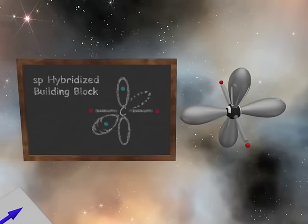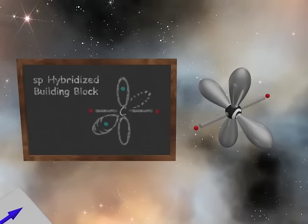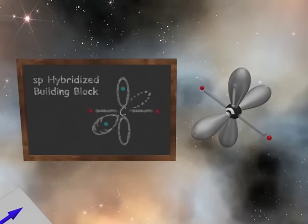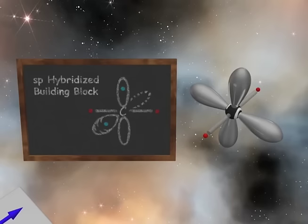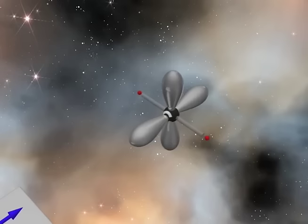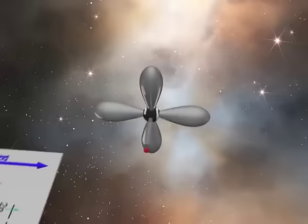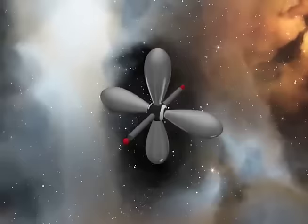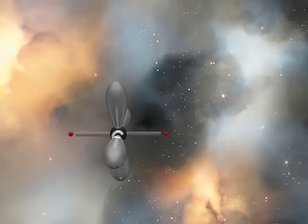Your instructor will often draw the sp hybridized carbon on the blackboard as shown. Solid lines are in the plane of the board, shaded lobes are coming out of the plane of the board, and dashed lines are going behind the plane of the board. Each of the two sp hybrid orbitals contains one electron capable of forming a sigma bond. The sp hybridized carbon is now capable of forming two sigma bonds and two pi bonds.